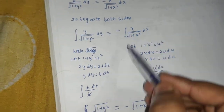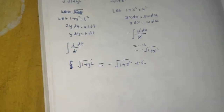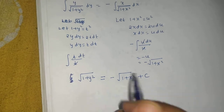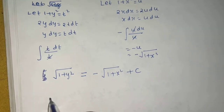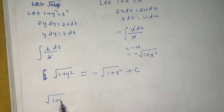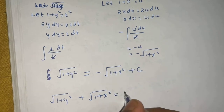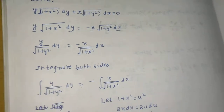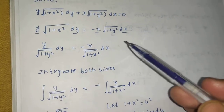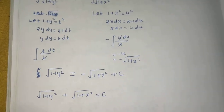Bringing the term to the LHS, the final answer is √(1+y²) + √(1+x²) = C. This is an easy variable separable differential equation — just take similar variable terms to one side, integrate, and get to the answer.